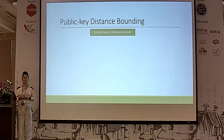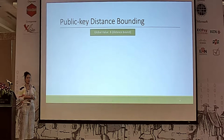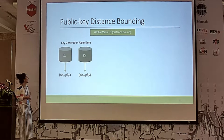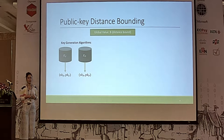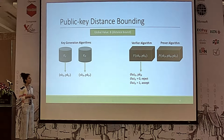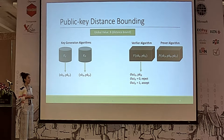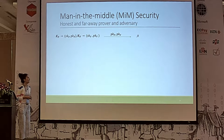Let's define public key distance bounding more formally. We have B, a distance bound known by all algorithms in the protocol. We have two key generation algorithms, KV and KB, which generate secret key and public key pairs for the verifier and the prover. We also have a verifier algorithm and a prover algorithm. At the end of execution, the verifier outputs a bit outV — either reject or accept — and a privacy output PKP.